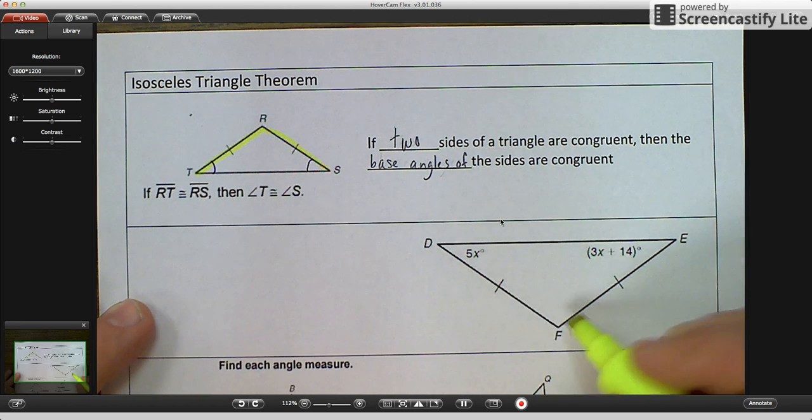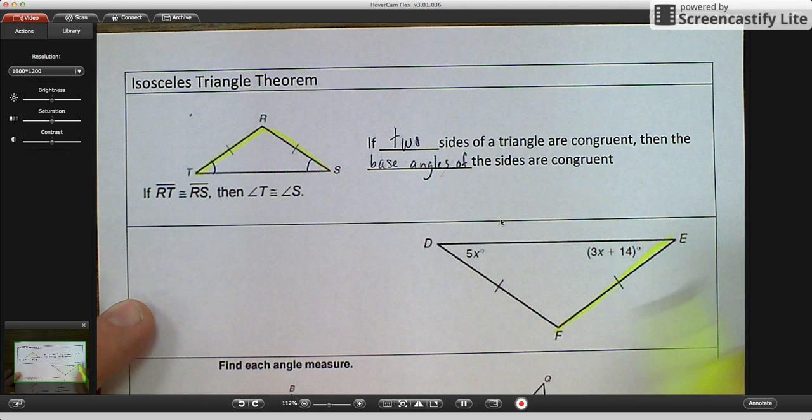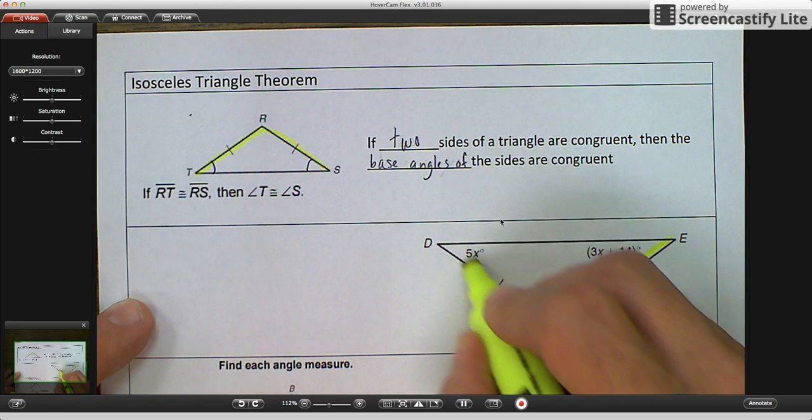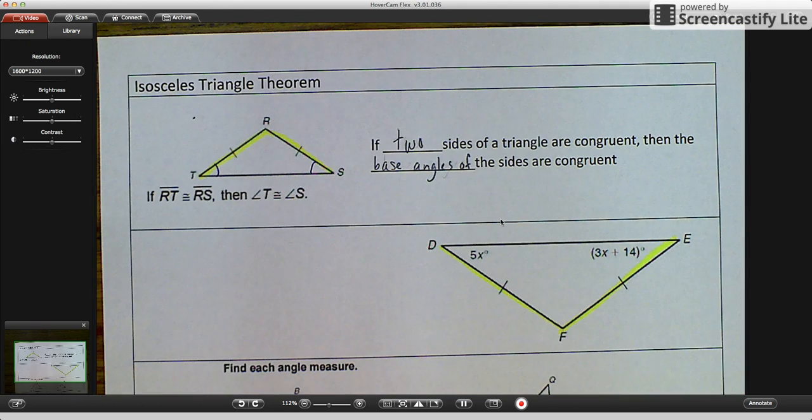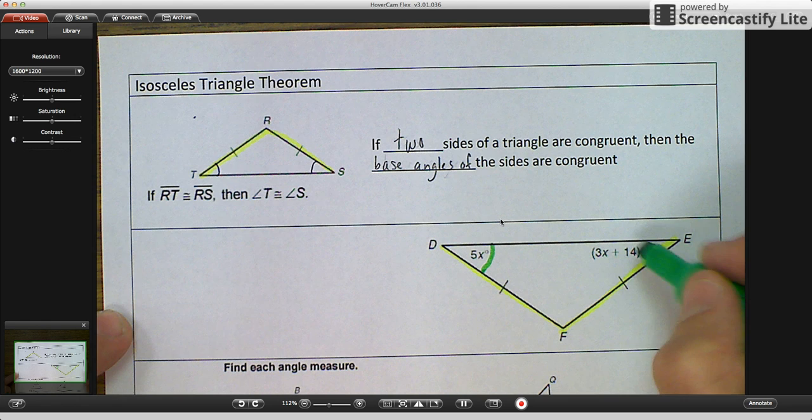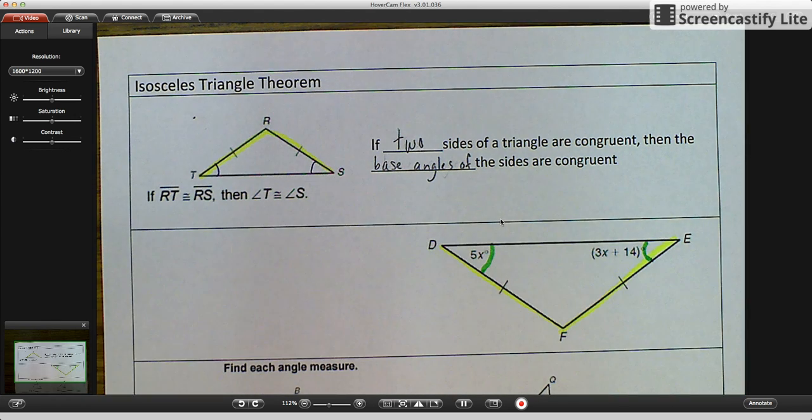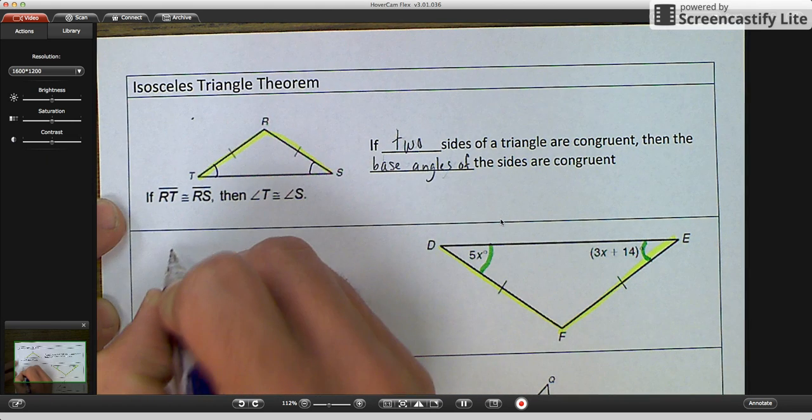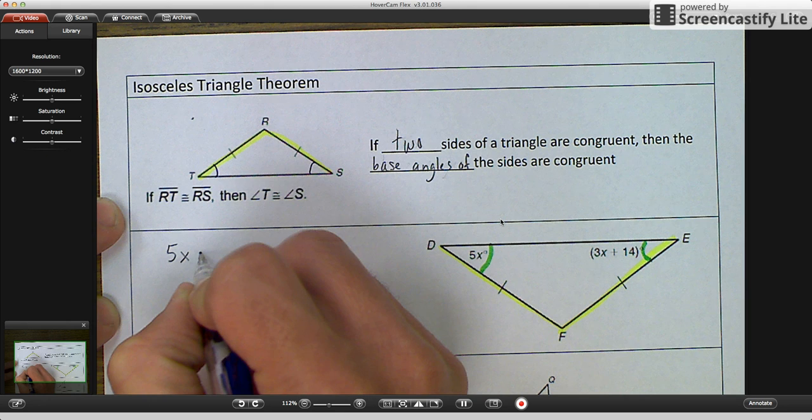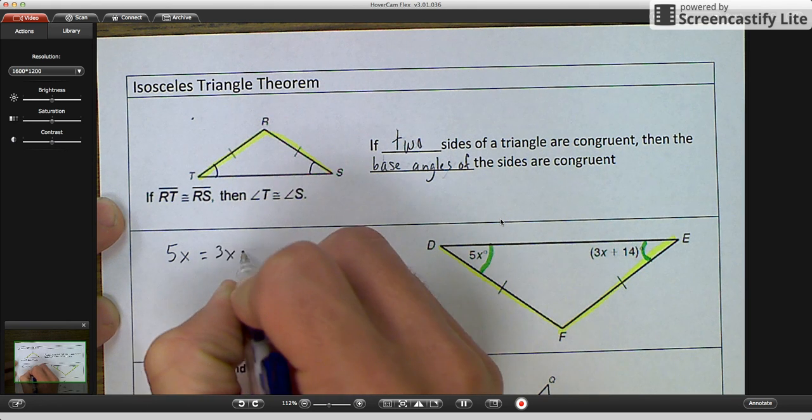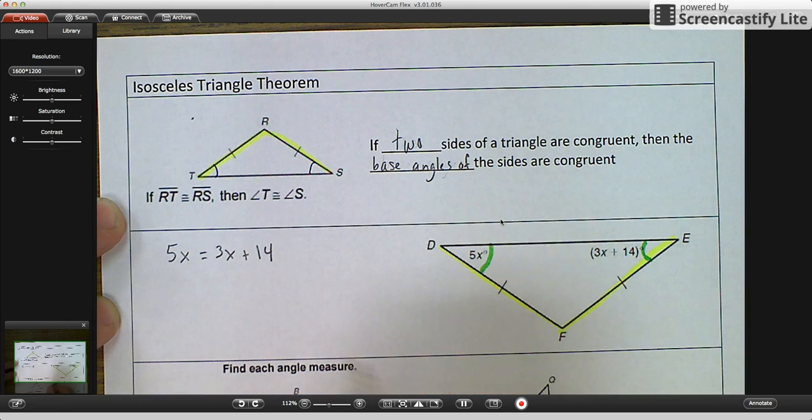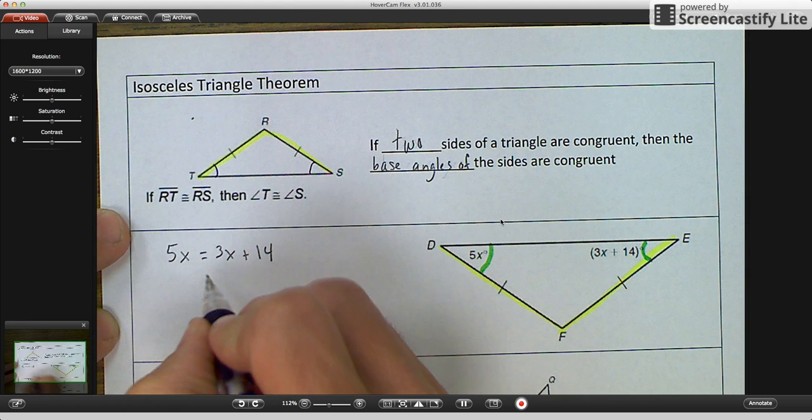We see that we have an isosceles triangle because FE is congruent to FD. We see that marking and we know that our base angles of those triangles are congruent. So we know that 5X is congruent to 3X plus 14. So congruent means that they're equal to each other. So the equation we're going to set up is 5X is equal to 3X plus 14. And then we're going to solve this equation for X.